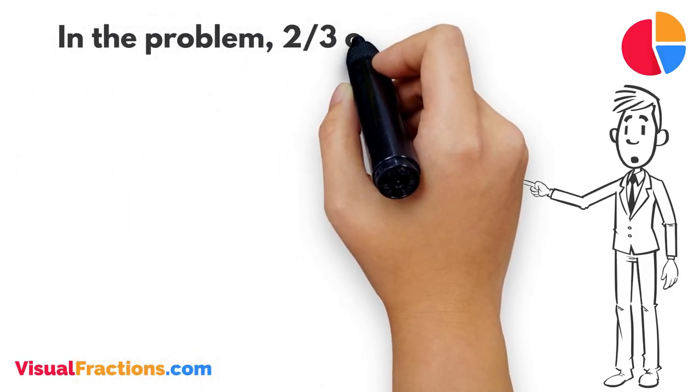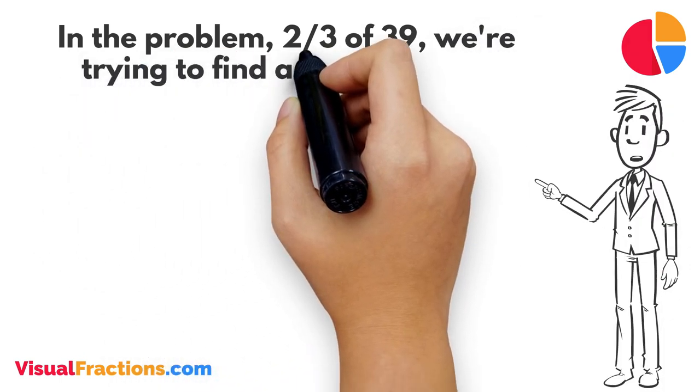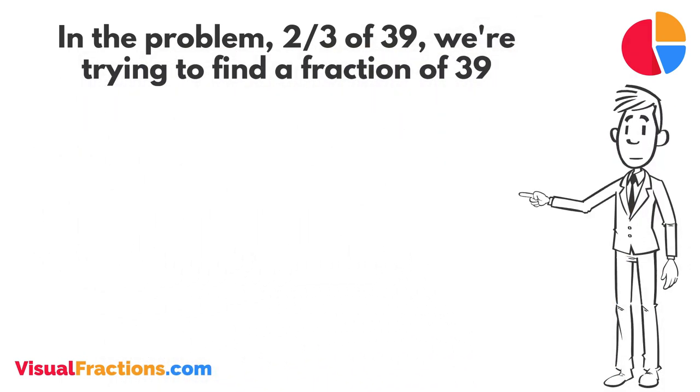In the problem, two-thirds of 39, we're trying to find a fraction of 39. Since we're only taking a part of it, we know our answer will be less than 39.